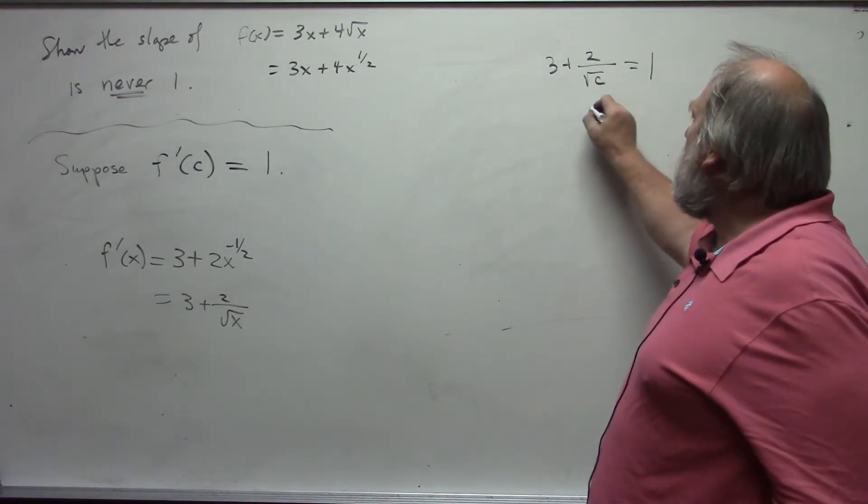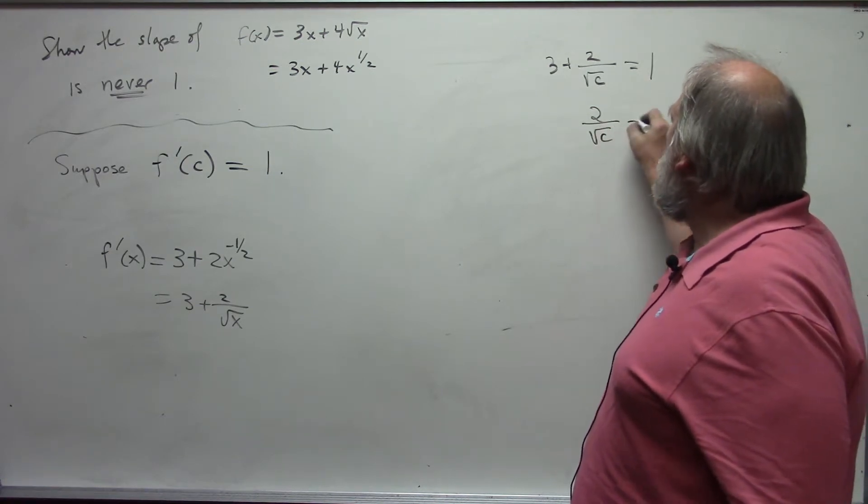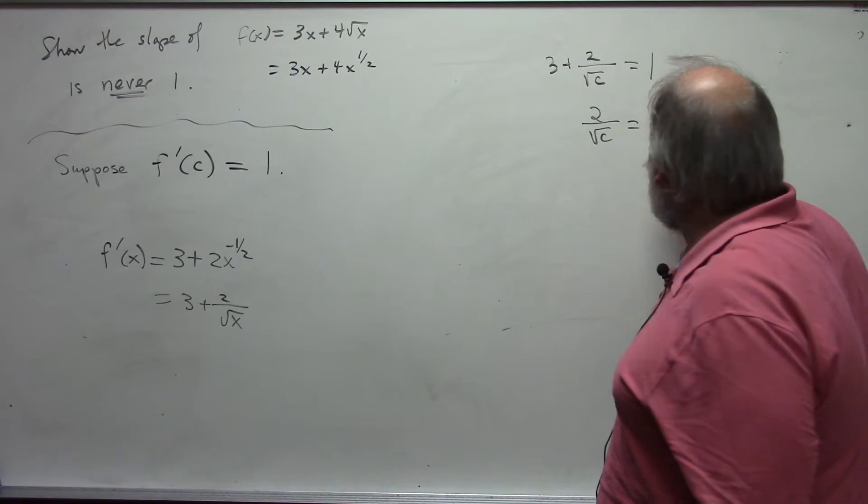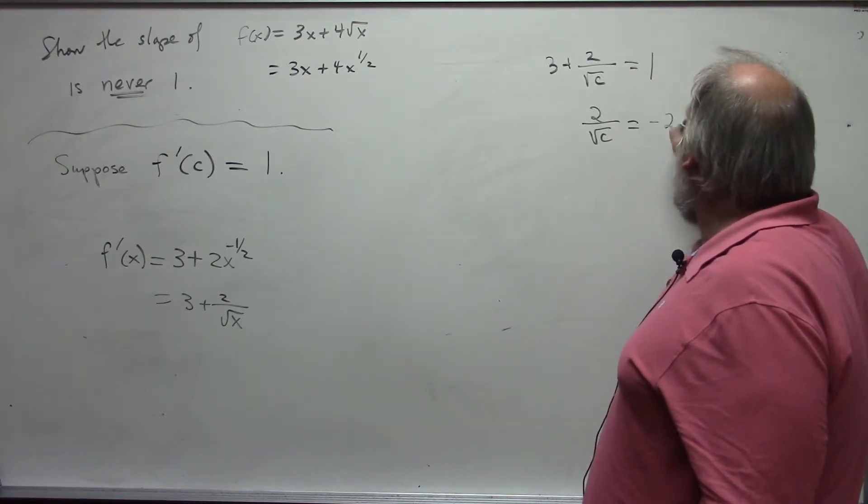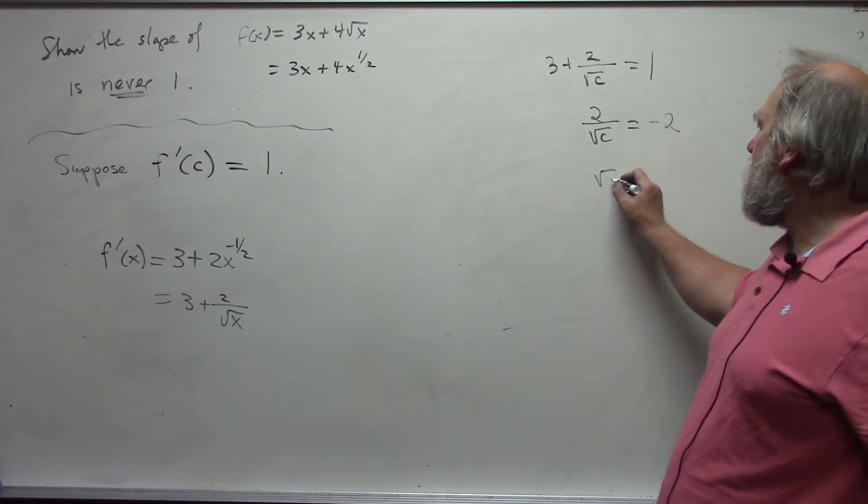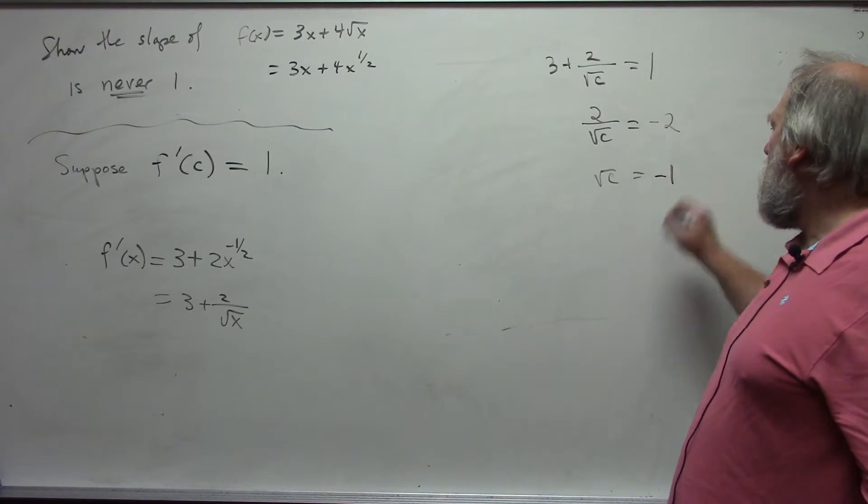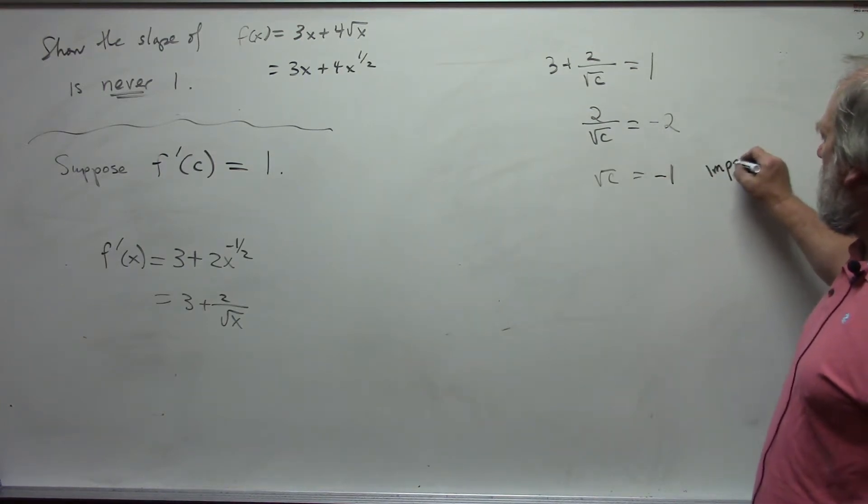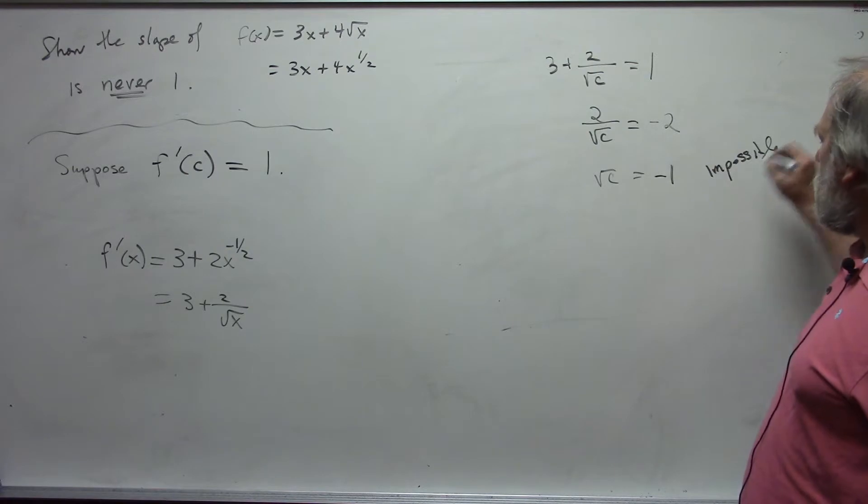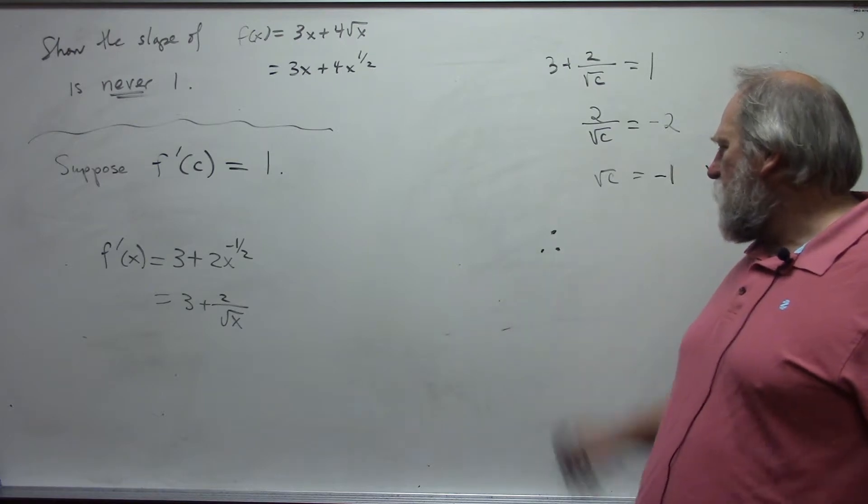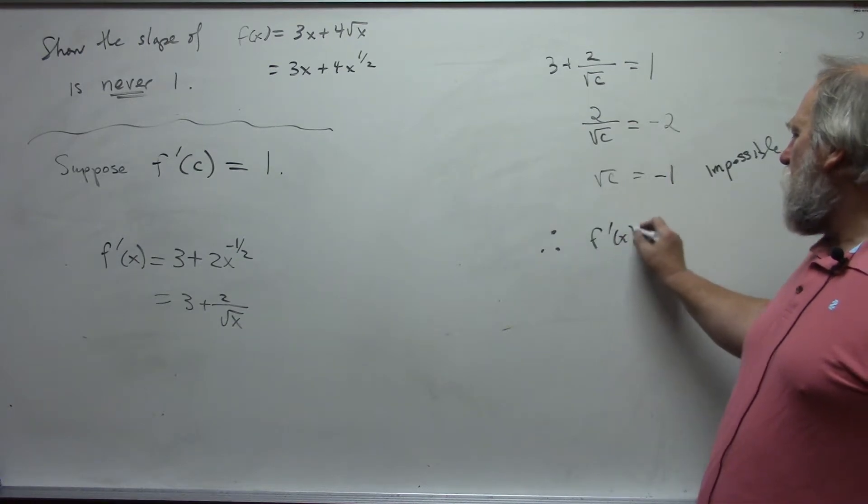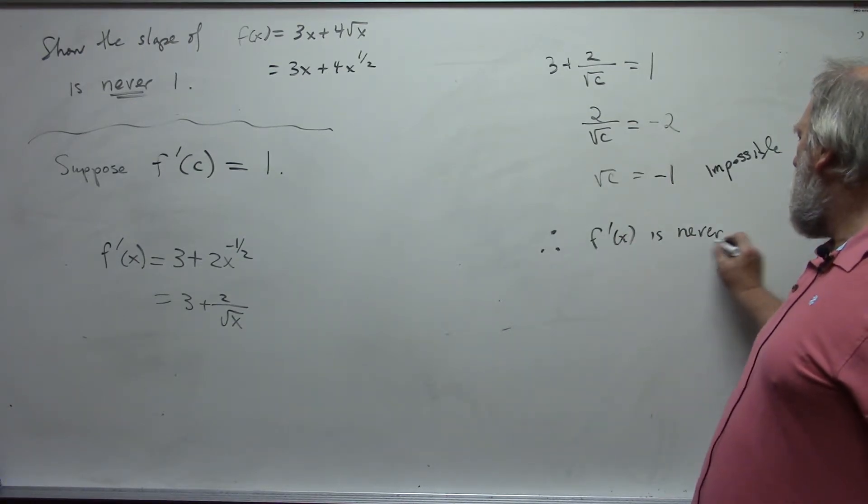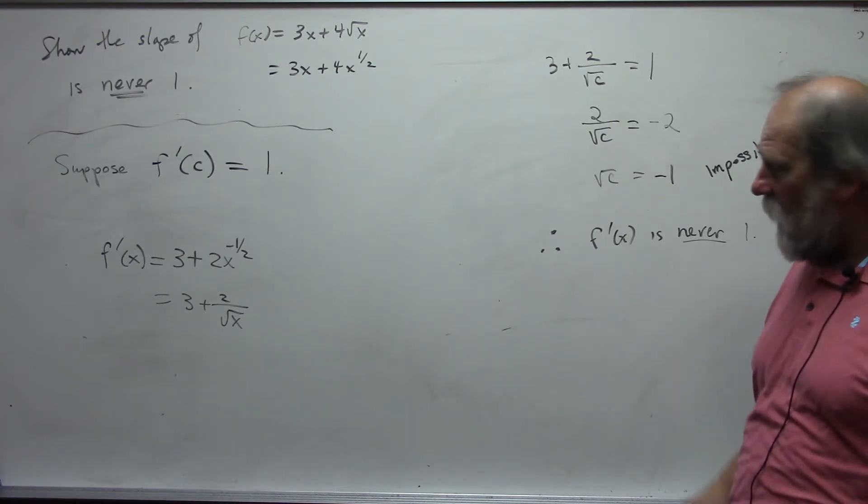And let's try and solve this. This becomes 2 over the square root of c is equal to negative 2. I can't subtract correctly. Which means that the square root of c is equal to negative 1, and this is impossible. Square root of any positive real number is always positive. Therefore, and three dots in a triangle like that means therefore, f prime of x is never 1. There is no value that makes that equal to 1.